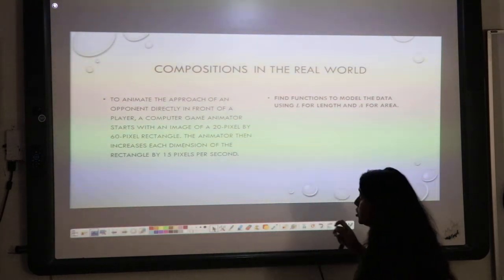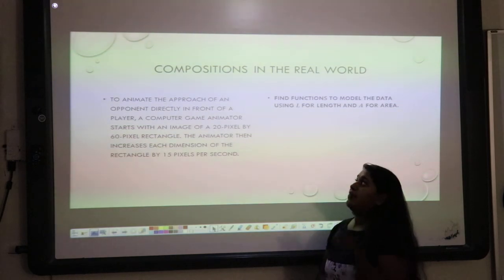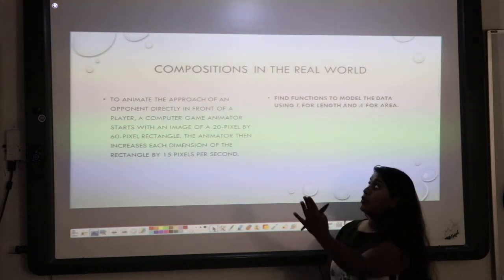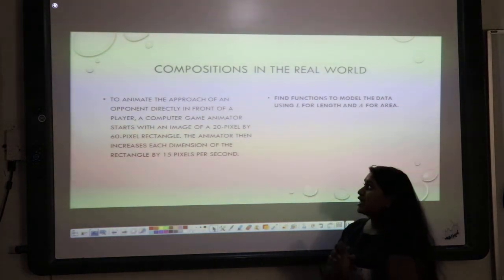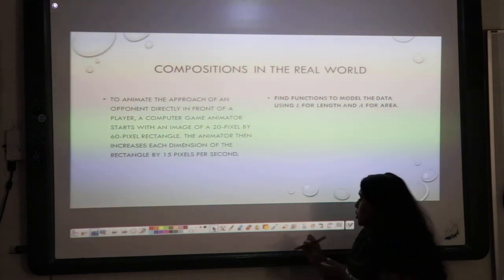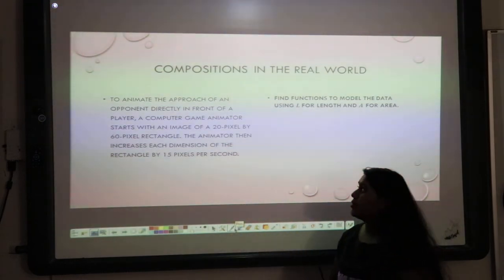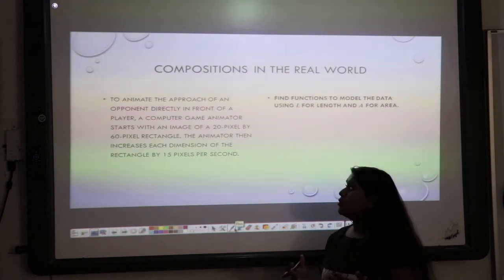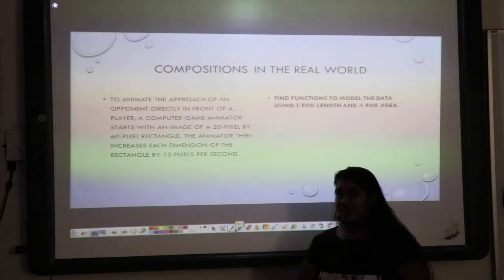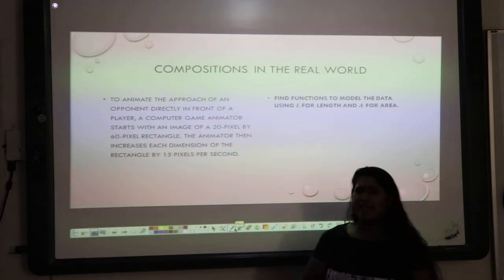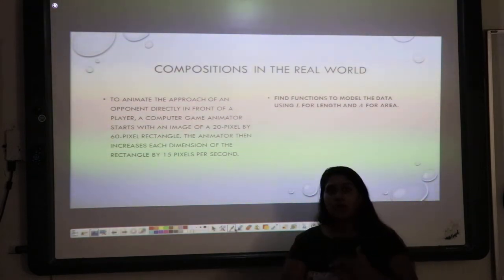And guess what? We can do that with some simple compositions. Here's my question. To animate the approach of an opponent directly in front of a player, a computer game animator starts with an image of a 20 pixel by 60 pixel rectangle. The animator then increases each dimension of the rectangle by 15 pixels per second.